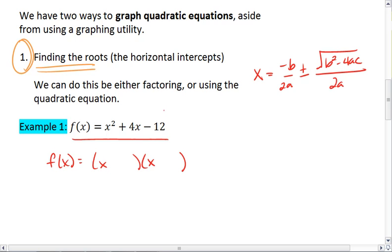Negative 12 factors into 1 times 12, or 2 times 6, or 3 times 4. And we want these numbers to subtract to give us 4, so we're going to pick 2 times 6. Since 4 is positive, we'll make the 6 positive, the 2 negative.